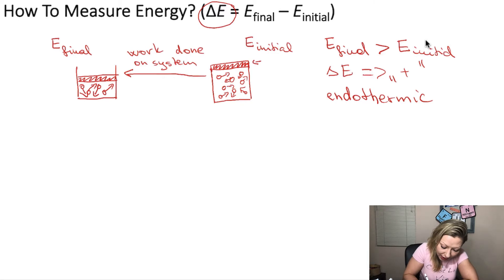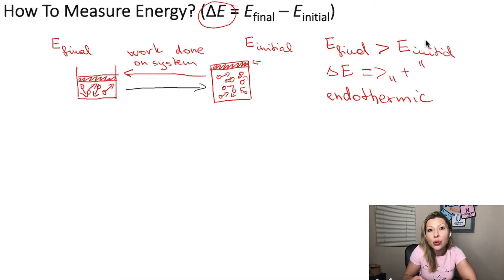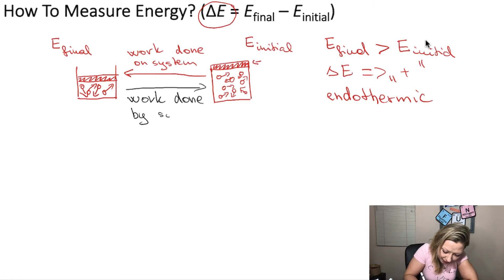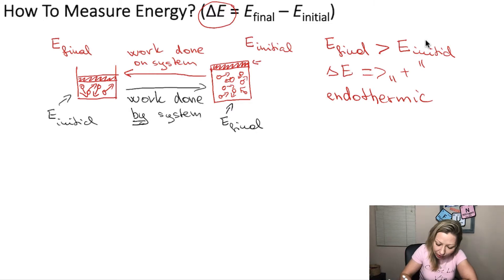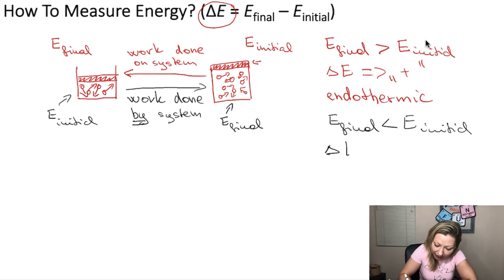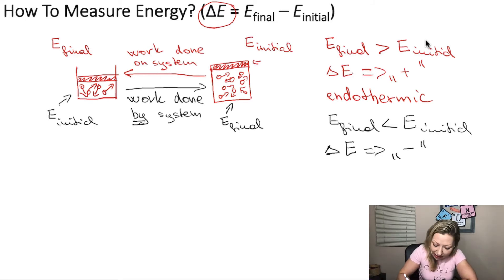What happens if I go backwards? I can go from the higher energy state into the lower internal energy state by the system doing work on the surroundings — work done by the system. This side is going to be my initial state and this is the internal energy of my final state, because I went backwards. In this case, my final internal energy is actually smaller than my initial internal energy. So when I calculate delta E, I'm going to end up with a value that has a negative sign, because I take final minus initial. These types of processes are called exothermic.